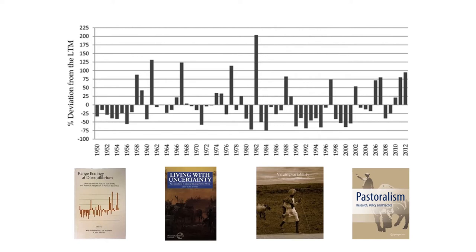This came to a head in a debate in the late 1980s and early 1990s, following a set of papers by Jim Ellis and colleagues who had worked in northern Kenya — a long-term study in Turkana. Their classic paper of 1988 provoked a big debate. Jim and others argued that if the coefficient of variation of rainfall was somewhere above 33%, this was a non-equilibrium environment.